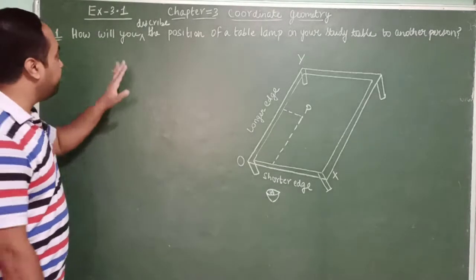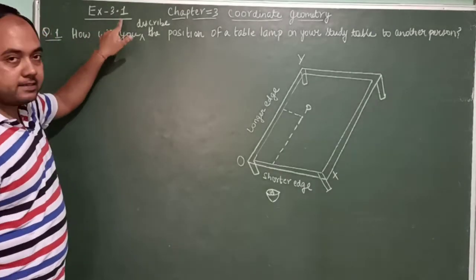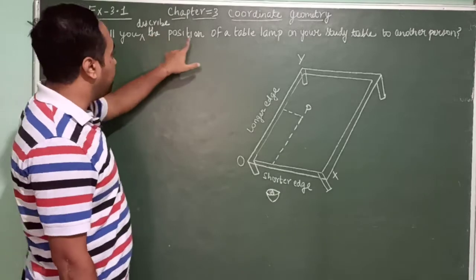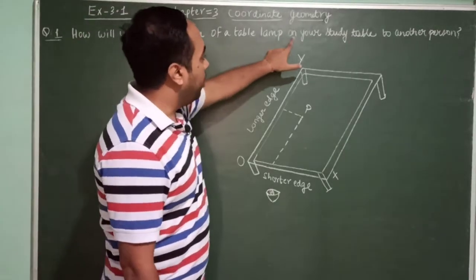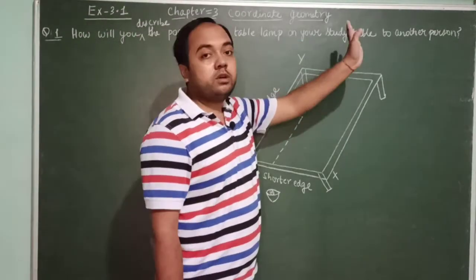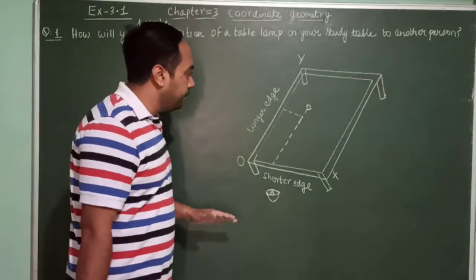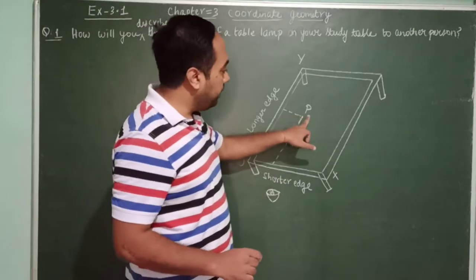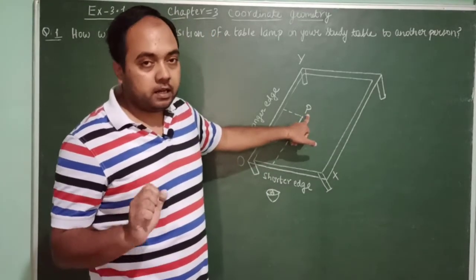In this video lecture, I will explain question number one of exercise 3.1. The question is: how will you describe the position of a table lamp on your study table to another person? Suppose this is a study table and point P is representing the table lamp.